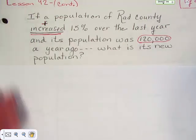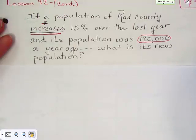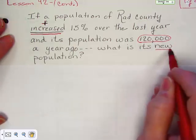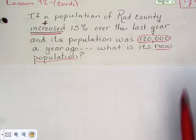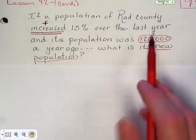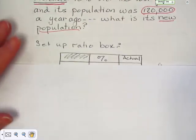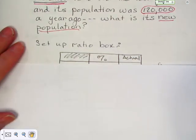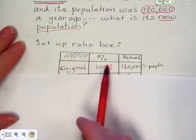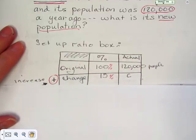And its population was started out at a hundred and twenty thousand a year ago. What is its new population? In other words they started at a hundred and twenty thousand, they increased fifteen percent. So setting it up in your ratio box looks like this.